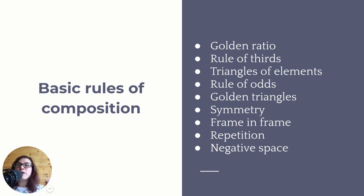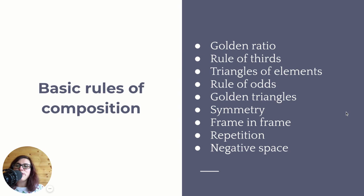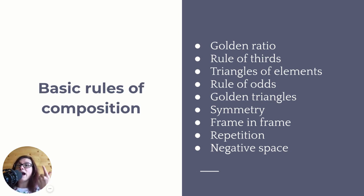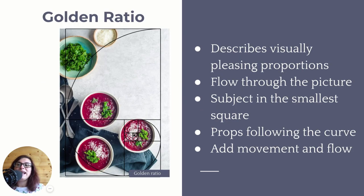In this class, we're covering the basic composition rules, and we have other classes for more advanced rules. Here's a list of the basic composition rules — we're going to go through each individually. The golden ratio, the rule of thirds — you might have heard of some of these, and I'll explain what they are, how to use them, and it will all make sense. Let's start with one of the most important ones: the golden ratio.